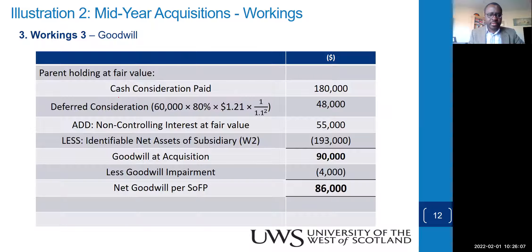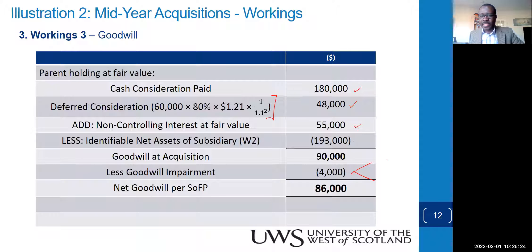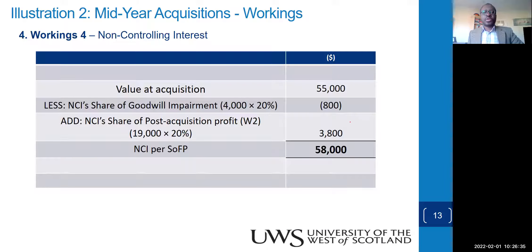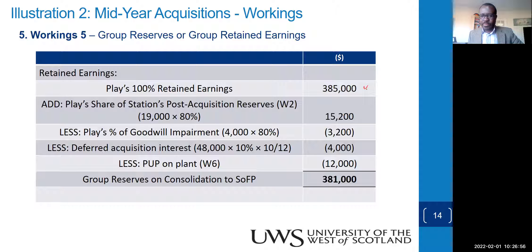Goodwill calculation: cash paid plus deferred cash consideration, plus fair value of NCI = 193,000. Less net identifiable assets at acquisition. There was an impairment of 4,000 — parent takes 80%, NCI takes 20%. Non-controlling interest: start with fair value of 55,000, deduct NCI's share of goodwill impairment, add NCI's 20% share of post-acquisition profits of 19,000.